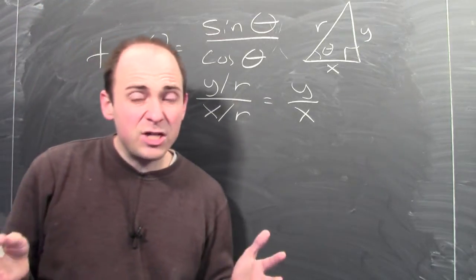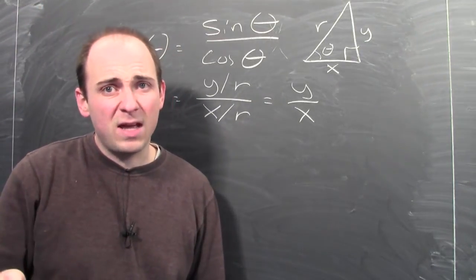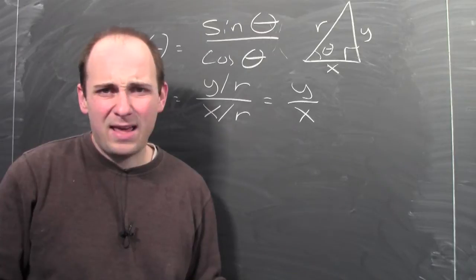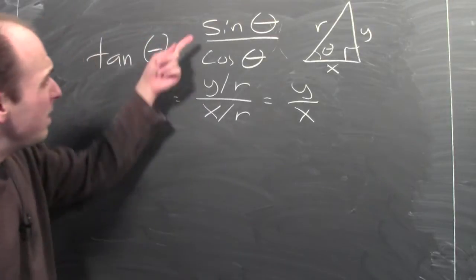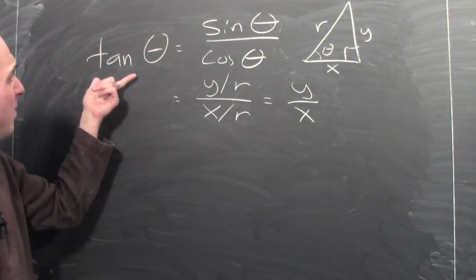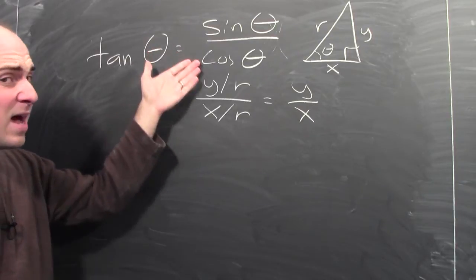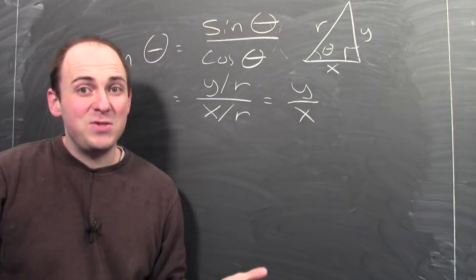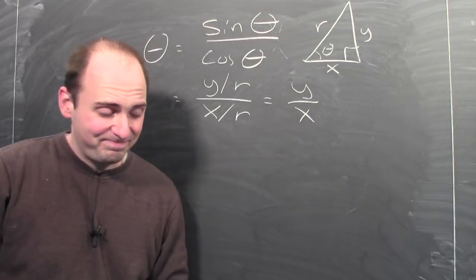I can express tangent theta as sine theta over cosine theta. I know how to differentiate sine and cosine, and by writing tangent this way, tangent is now a quotient, so I can use the quotient rule.